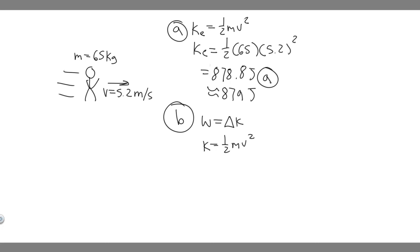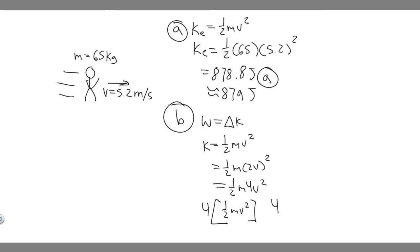We want to know how much work is required to double his speed. If we want to double the speed, we write it as 0.5 m times (2v) squared. Squaring that out gives 0.5 m times 4v squared. Pulling out the 4, we get 4 times 0.5 mv squared — which is just 4 times the kinetic energy. So the work required to double the speed equals 4 times the kinetic energy.